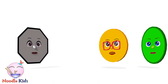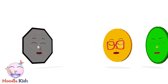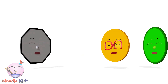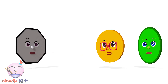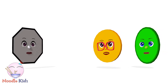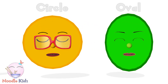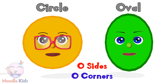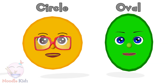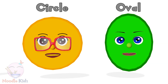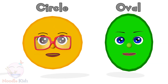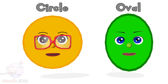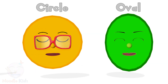What about us? What about you guys? You have no sides. Doesn't mean we don't get to be in the show! My name is Circle, and my name is Oval. We have zero sides and we don't have any corners, but we do have one face which could be traced or seen as a flat shape when looking at us. Don't forget that!